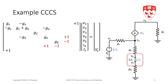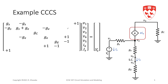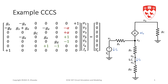Finally, the controlled current source itself appears in the same ie column, but at rows 2 and 3 where the current source is connected. We place minus alpha in row 2 and plus alpha in row 3. So the complete stamp for the current controlled current source has plus one, minus one, plus one, minus one for the short circuit portion, and minus alpha and plus alpha for the current source portion. That concludes our stamp for a current controlled current source.